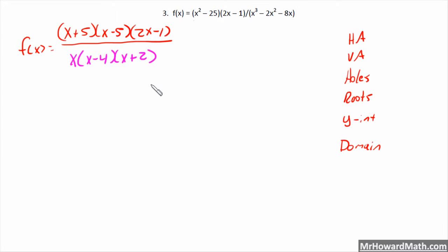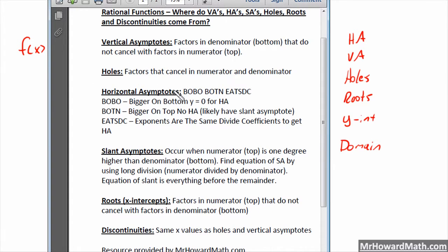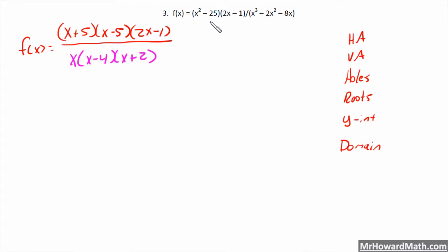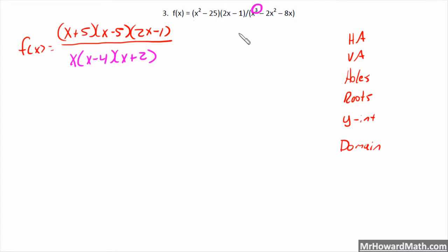Now that we have it fully factored we can start breaking it down. Let's look at our list. Horizontal asymptote — we'll start there. We use Bobo, Bott, and HDC: bigger on bottom, bigger on top, or are the exponents the same? We have to do some work here. Looking at the original function, we need the degree of the numerator. The denominator is easy — it's degree 3. This numerator is partially factored.